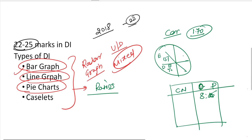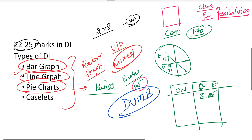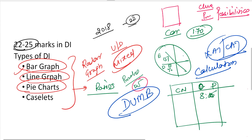If we compare puzzles and data interpretation, I will always go with data interpretation. In puzzles, the basic problem is that if it clicks on time, great — otherwise you're stuck, because there are many possibilities. But data interpretation, I think, is dumb — in the sense that there will not be more varieties. It will be the same calculations, the same fundamentals. DI is really, really scoring. You can maintain 100% accuracy and score on all 22 marks. This is where a lot of people will not attempt, so if you are smart, you should be attempting this.